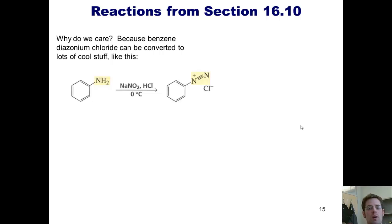For example, if I take benzene diazonium chloride and treat it with copper bromide, I can convert it into bromobenzene. In contrast, I can treat benzene diazonium chloride with copper chloride and convert it into chlorobenzene.